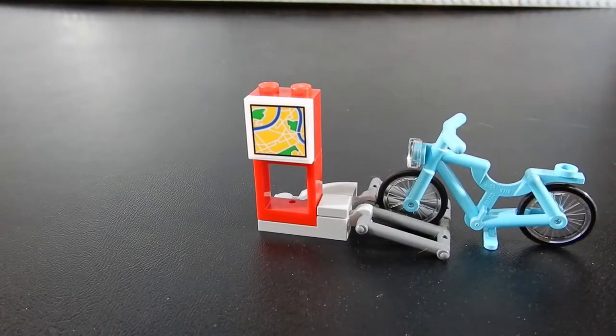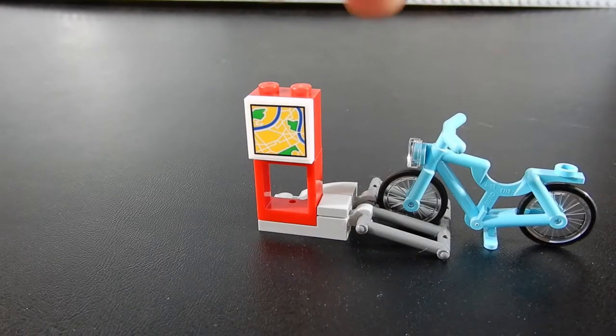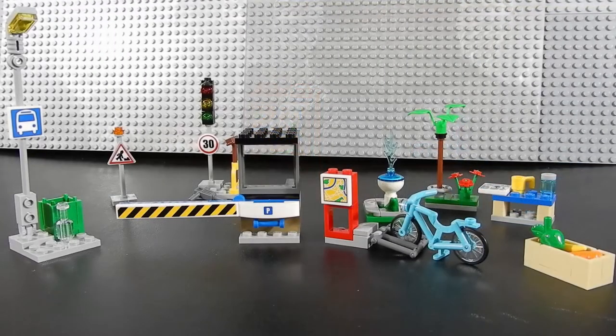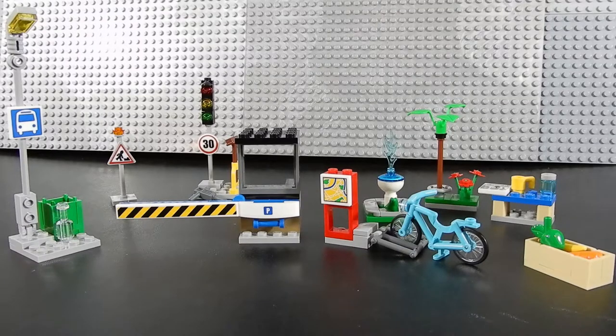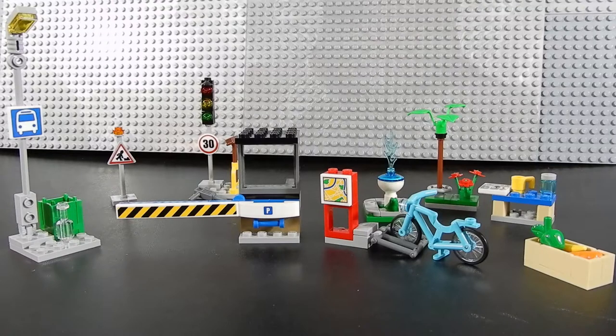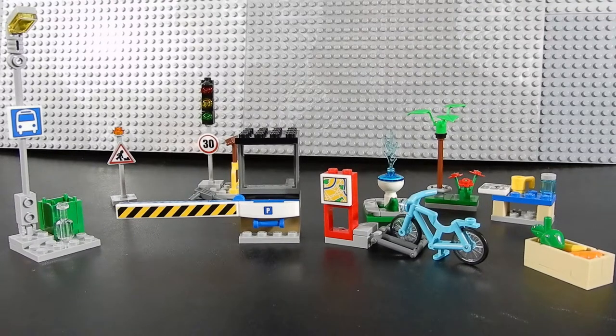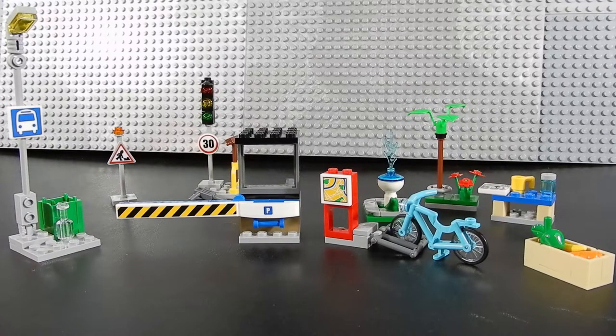There's also a little map there to help tourists find their way around the town. It's just a nice little build. So that's everything. Set number 40170 from LEGO City. This is just a nice little addition to add some life and some detail to your LEGO City layout. Just 100 pieces but it could potentially make a nice difference.